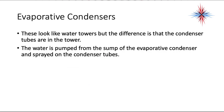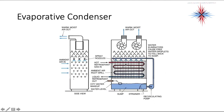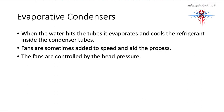Evaporative condensers look like cooling towers, but the difference is that the condenser tubes are inside the tower. Water is pumped from a sump and sprayed directly on the condenser tubes, which increases heat removal over a standard air-cooled condenser. When water hits the tubes it evaporates, cooling the refrigerant inside. Fans are sometimes added to speed the process and are controlled by head pressure.